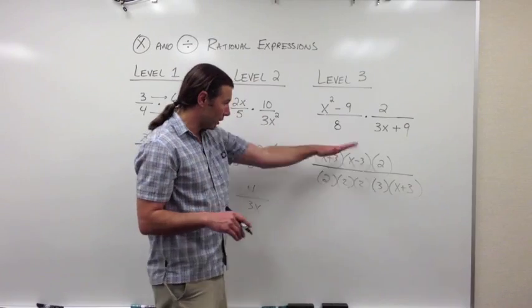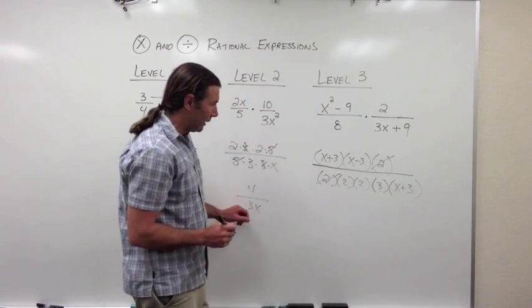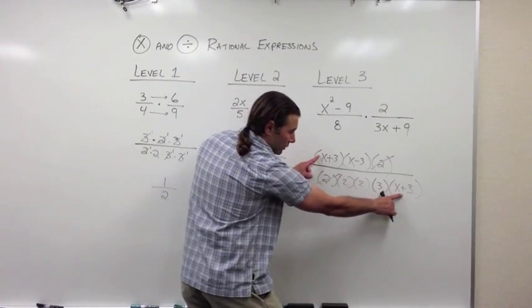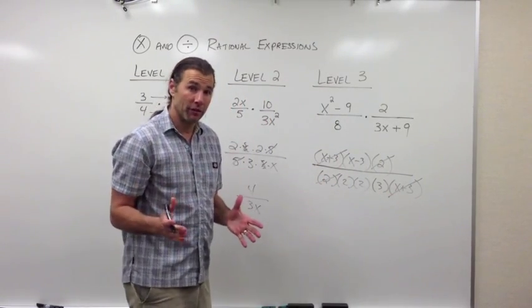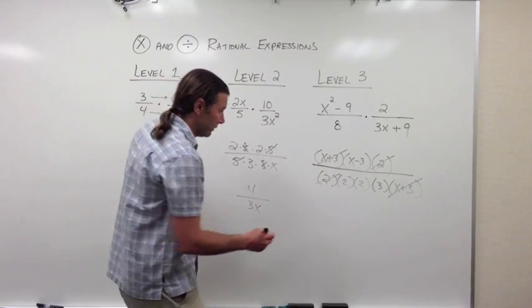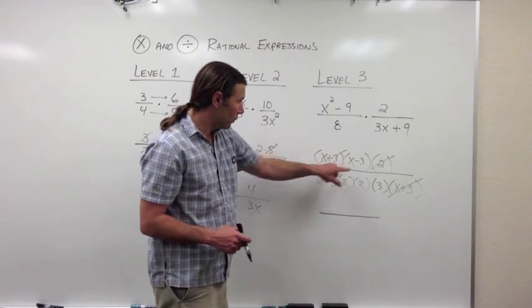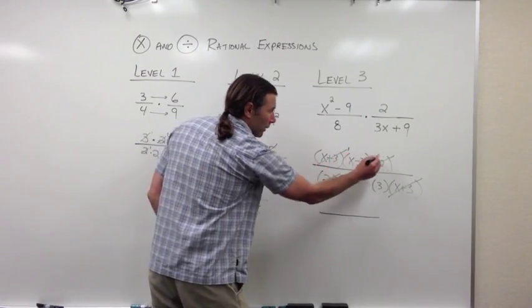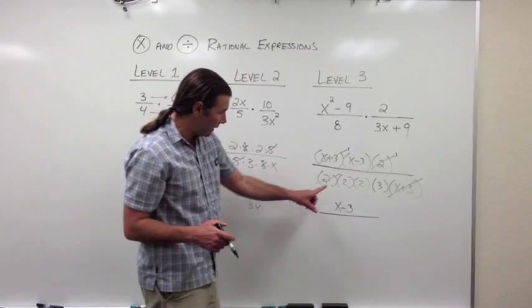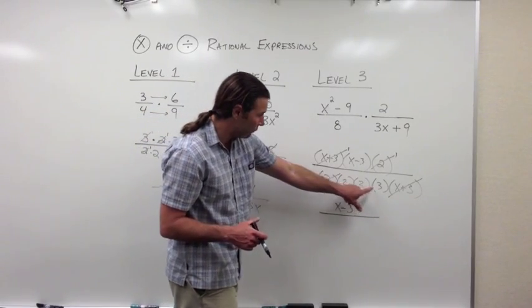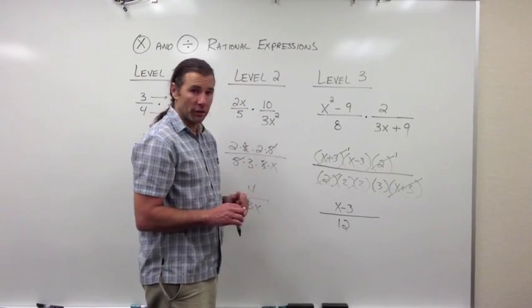Now that everything is factored, I'll divide out the common factors. I have a common factor of 2 — easy to see, so I'll divide that out. I also have a common factor of (x + 3), and I can divide that out as well. Now I multiply what's left. In the numerator, all I have is (x − 3). In the denominator, I have 2 times 2 which is 4, and 4 times 3 is 12. So the final simplified answer is (x − 3) over 12.